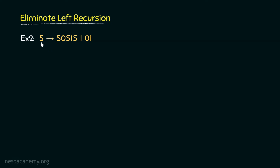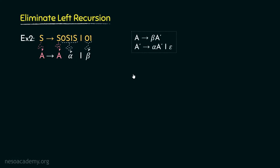Let's move on to the next example. Observe this grammar: S can be rewritten as S0S1S or 01. Here S is the A, reoccurring as the leftmost non-terminal on the right hand side. The remaining portion, 0S1S, is alpha, and 01 is beta. We convert this to: S can be rewritten as 01 — that is beta — followed by the new non-terminal S prime. S prime should be rewritten as 0S1S — that is alpha — followed by S prime itself, or epsilon. This makes the production right recursive, and we have eliminated the left recursion.